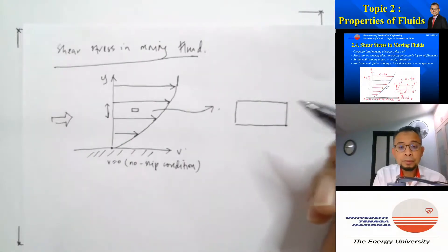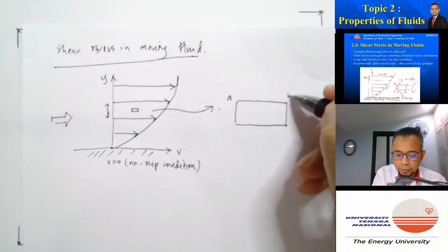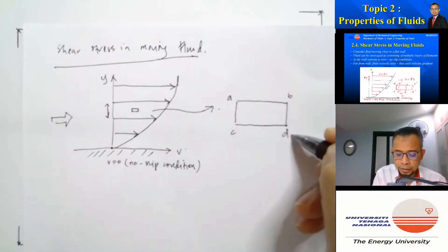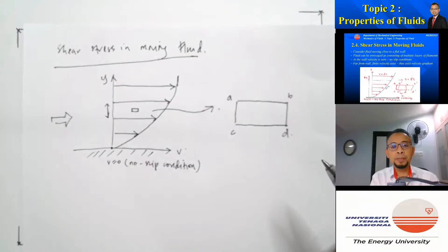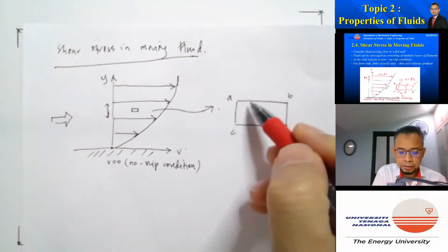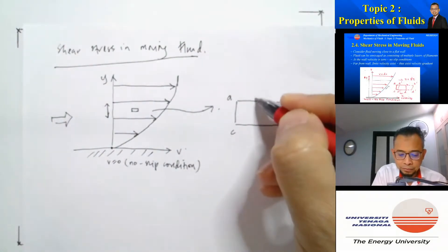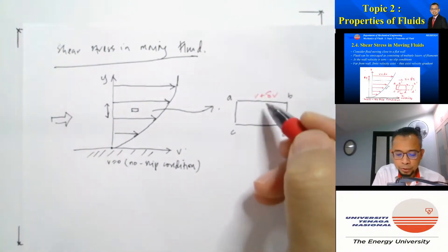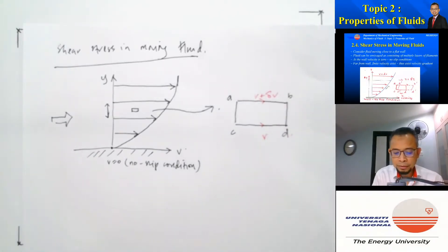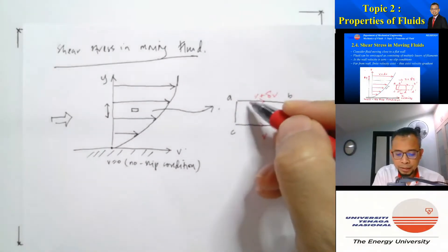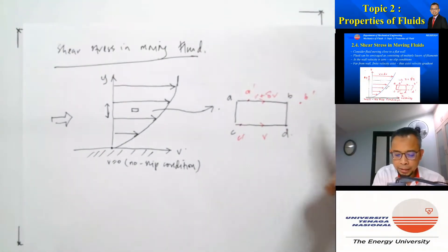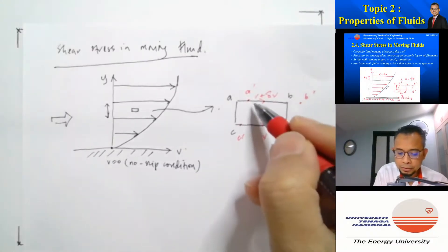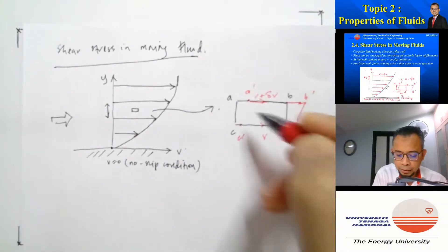I draw this element and call the corners point A, point B, point C, and point D. So before the fluid flows, this is what the element looks like. When the fluid starts to flow, the upper layer will be moving at a higher velocity — V plus delta V — whereas the bottom layer is moving at velocity V. So the upper points move further, becoming A dash and C dash, and the element will be elongated.